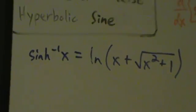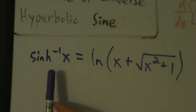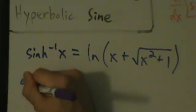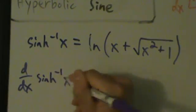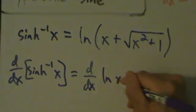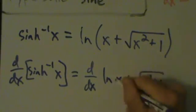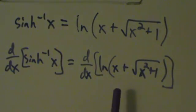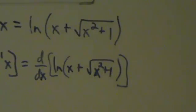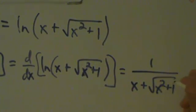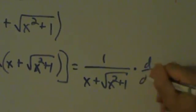So since arcsinh(x) equals that expression, to find its derivative we just take the derivative of the natural log of x plus square root of x squared plus 1. We basically just have a derivative of a natural log. The chain rule says the derivative of natural log of a thing is 1 over that thing times the derivative of that thing.